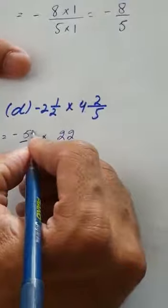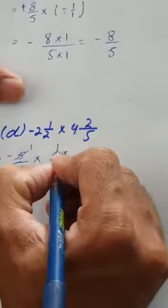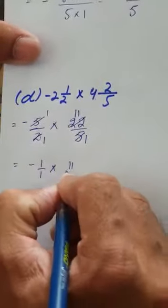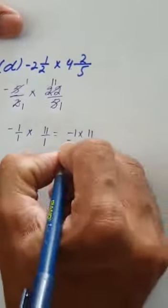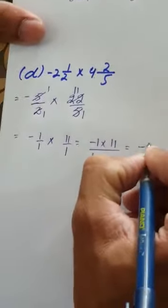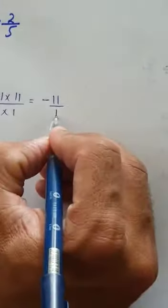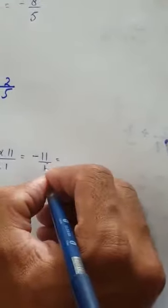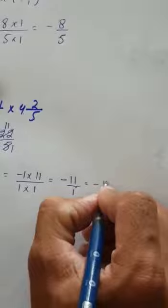Now we cancel: 5 ones are 5 and 2 elevens are 22. We are left with minus 1 over 1 multiplied by 11 over 1, which gives minus 1 multiplied by 11 over 1 multiplied by 1, equal to minus 11 over 1. Remember, if there is 1 in the denominator, minus 11 over 1 can simply be written as minus 11.